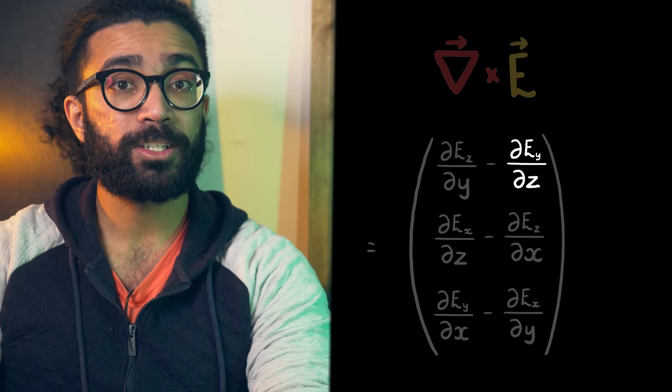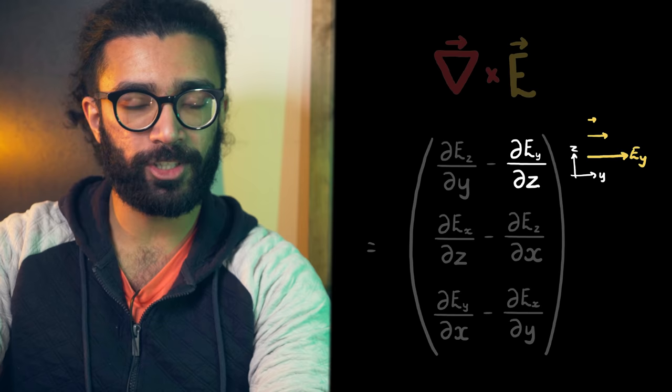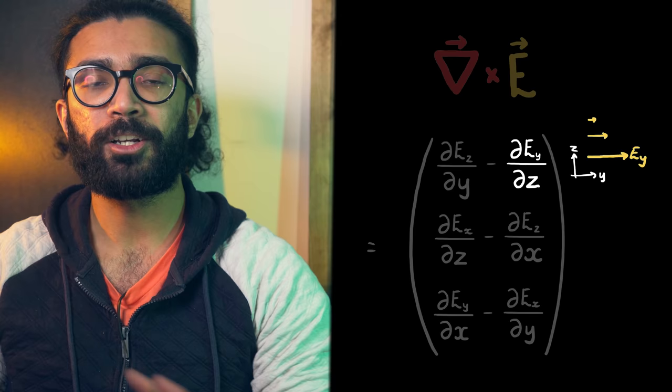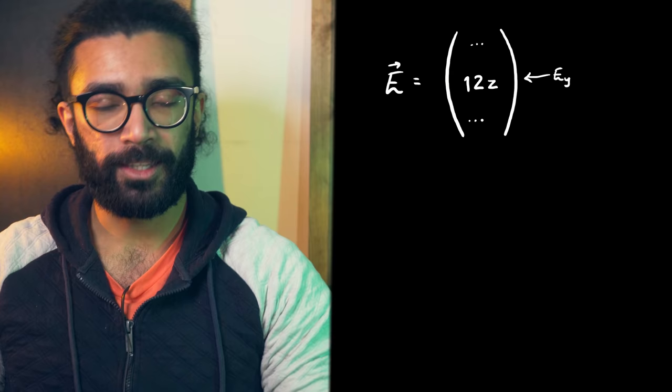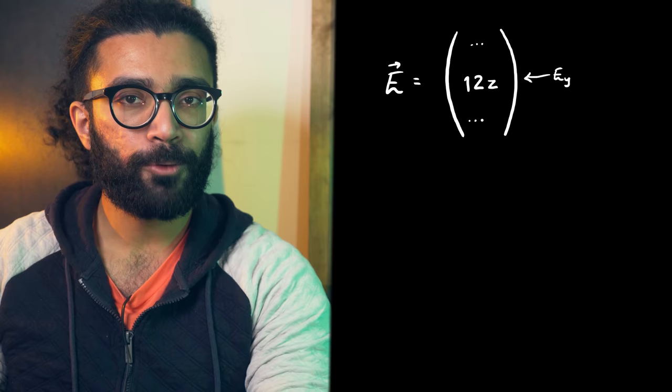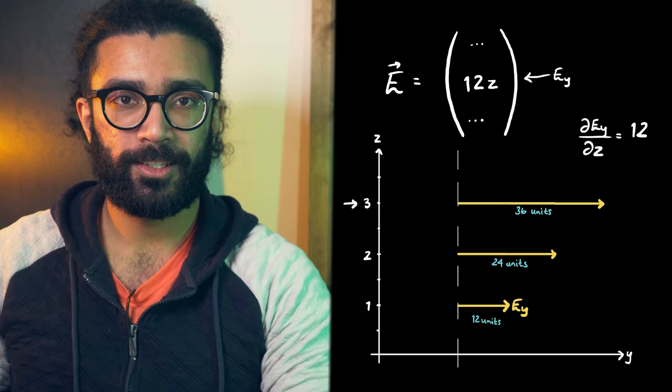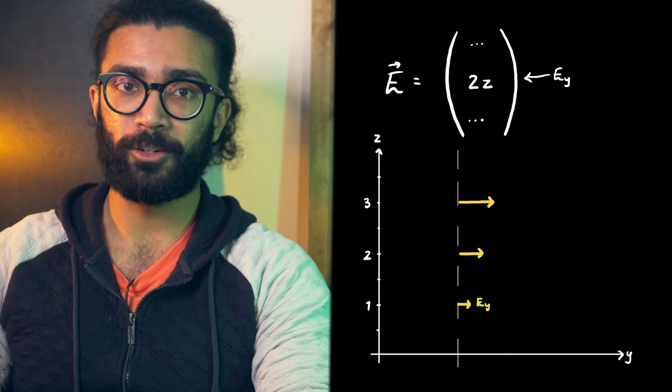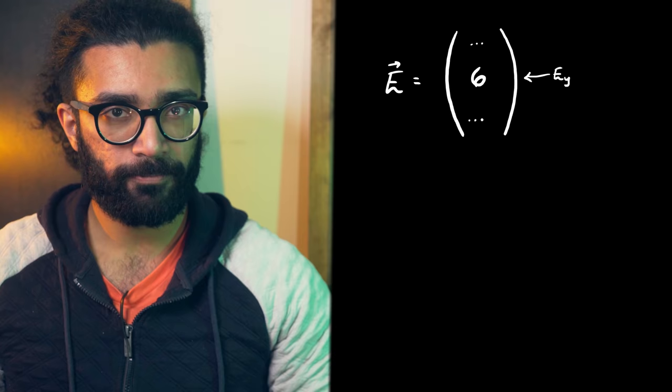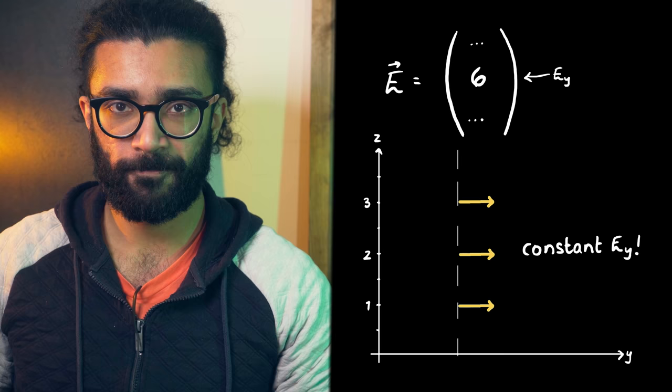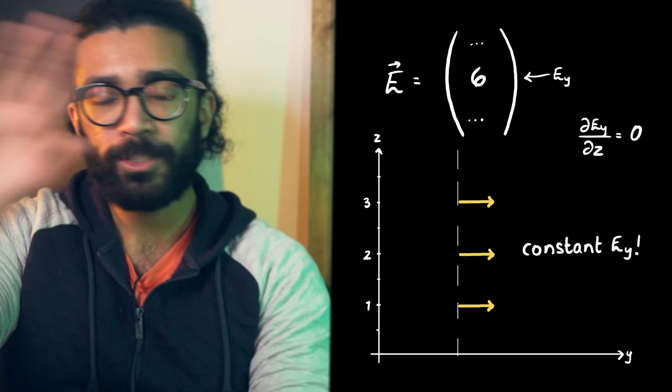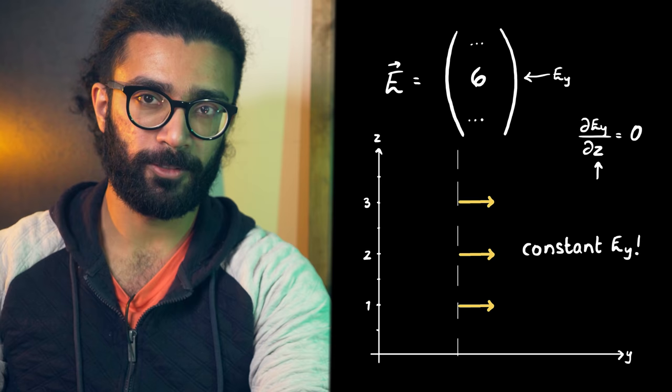For example, dEy by dz looks at how quickly the y-pointing component of the electric field changes as a function of z, and we're keeping x and y constant here. Let's say, for example, this is the y component of the electric field we happen to be studying. If we plot that on a graph against z, we see that it changes quite quickly as we move along z, from small values of z to large values of z. Whereas for a field that has this y component, it changes very slowly over z. dEy by dz has a small value. And for a component like this, it doesn't depend on z at all, so it doesn't matter where along z we are, the y-pointing component is always the same. Hence, dEy by dz here is equal to zero.